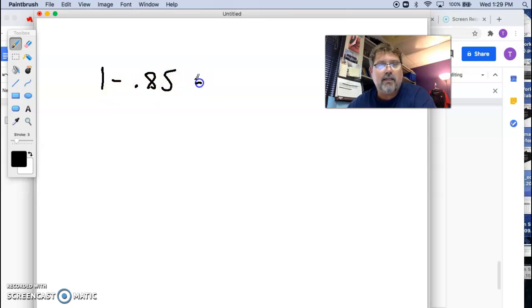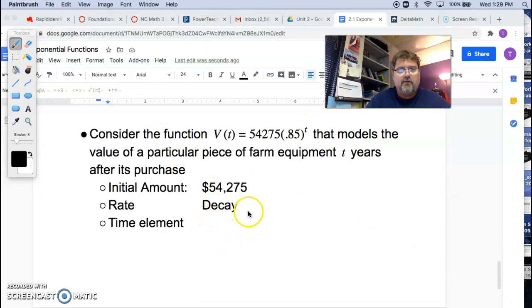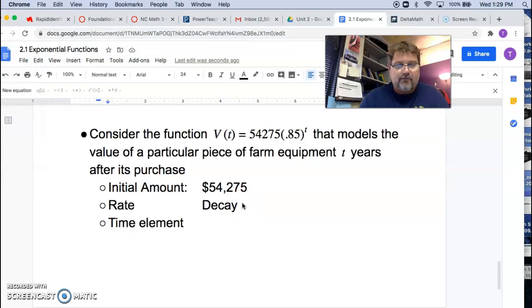I might say 1 - 0.85, right? And that gives me the 0.15. So the rate was actually 15%. So that's the way that one can be done. All right. So we're going to put that in here.